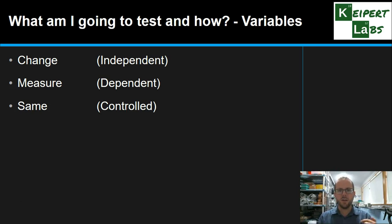So change, measure, same. Independent, dependent, controlled. And there's a little mnemonic that you can use to remember this. Cows moo softly, and I don't care. C-M-S-I-D-C.